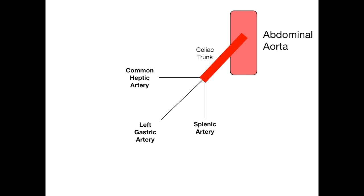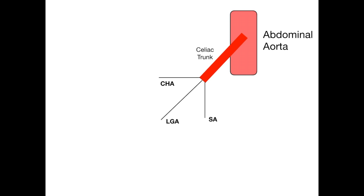To simplify, we'll use abbreviations. The common hepatic is at the top, the left gastric goes diagonally through the middle, and the splenic artery goes downward. Because this is on a slide it won't be in 3D, but it's organized so you can follow along. Let's take these one at a time, starting with the common hepatic artery.